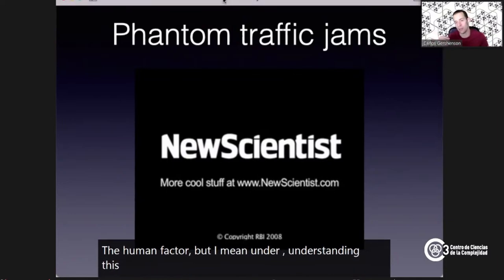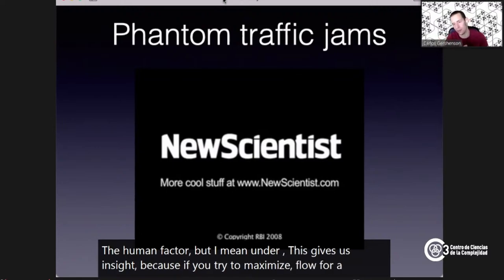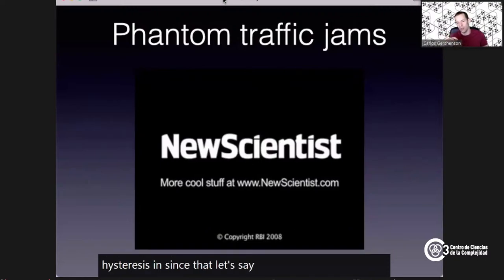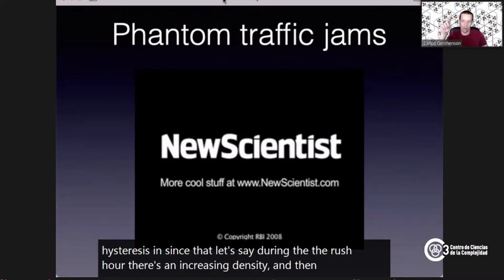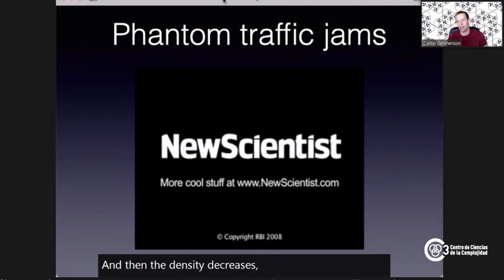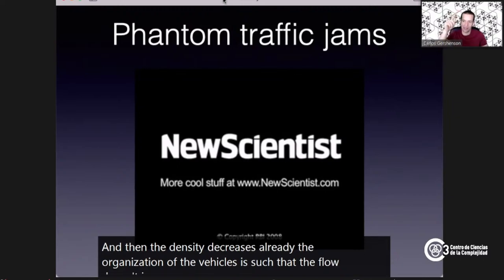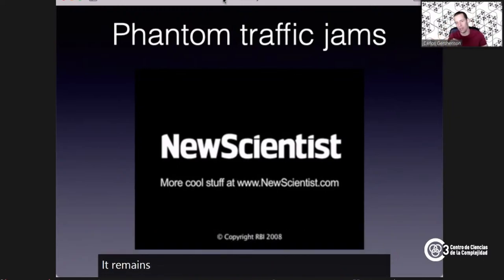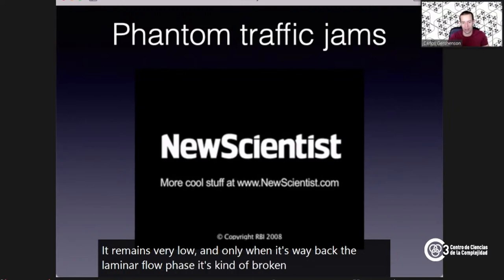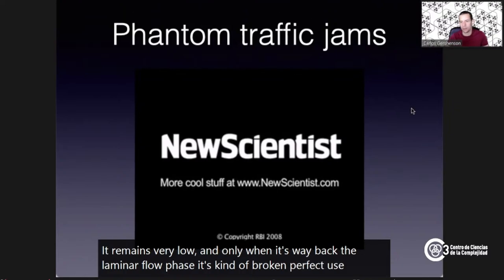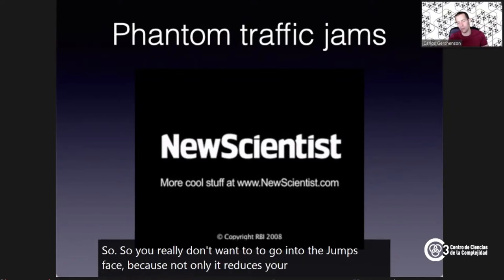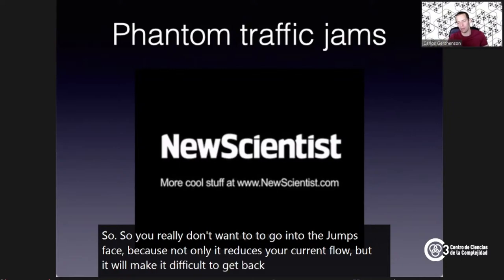Understanding this gives insight: if you want to maximize flow for a given density, you want to stay close to the phase transition but not go past it. There's hysteresis: during rush hour, as density increases, flow increases and then decreases due to traffic jams. When density decreases, the organization of vehicles is such that flow doesn't recover proportionally — it remains very low until conditions are well back into the laminar flow phase. You really don't want to enter the jammed phase because of this hysteresis.